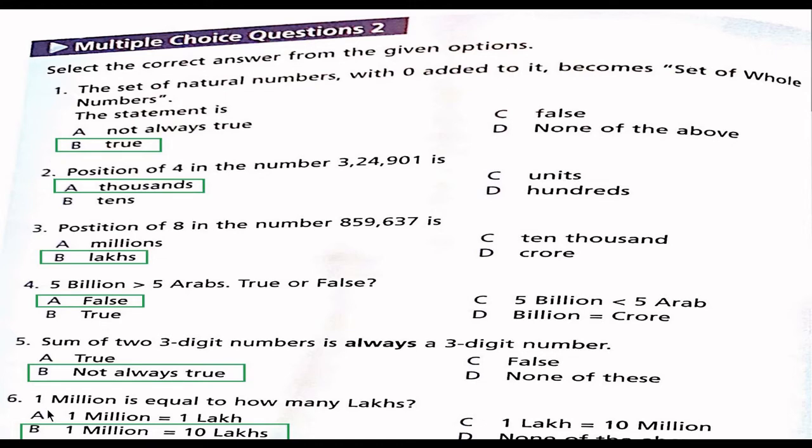Question 6: One million is equal to how many lakhs. Option A one million is equal to one lakh, option B one million is equal to ten lakhs, option C one million is equal to ten million, option D none of the above. The right option is B. One million is equal to ten lakhs.